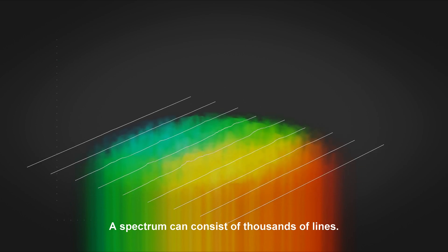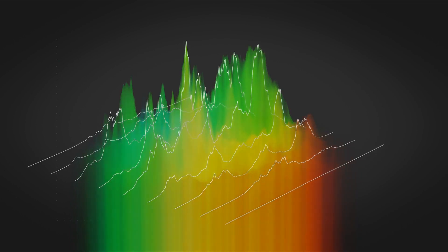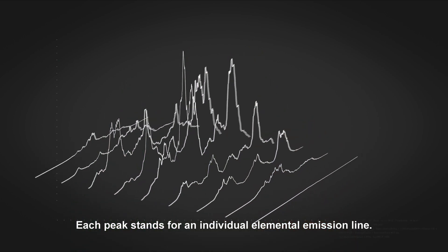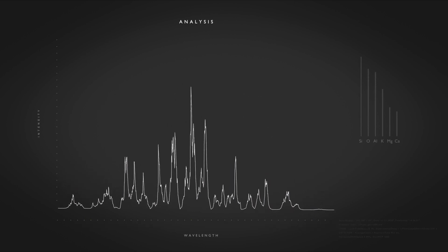A spectrum can consist of thousands of lines. Each peak stands for an individual elemental emission line. The intensity of a line is related to the concentration of the present element. This allows quantitative analysis with prior calibration using reference samples.